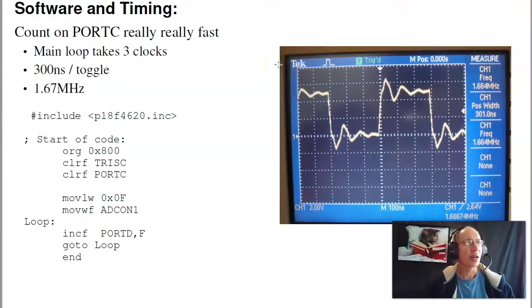Starting out, suppose I want to count really, really fast. The simplest program you can do to count is set port C to output, make everybody binary, and then just count. And here I'm actually counting on port D. I'll increment port D, put the result in port D, repeat.